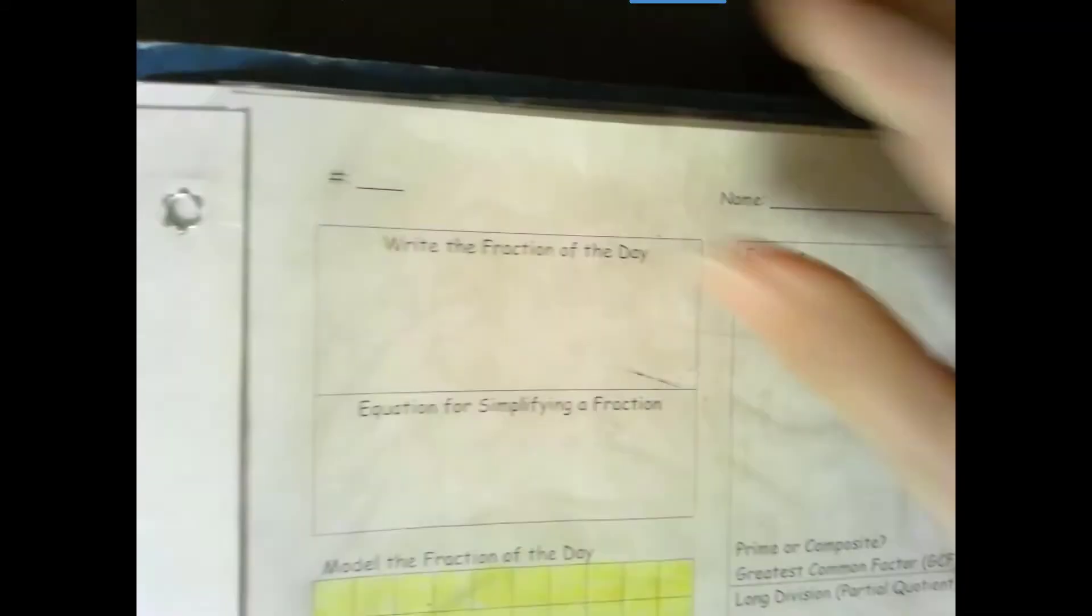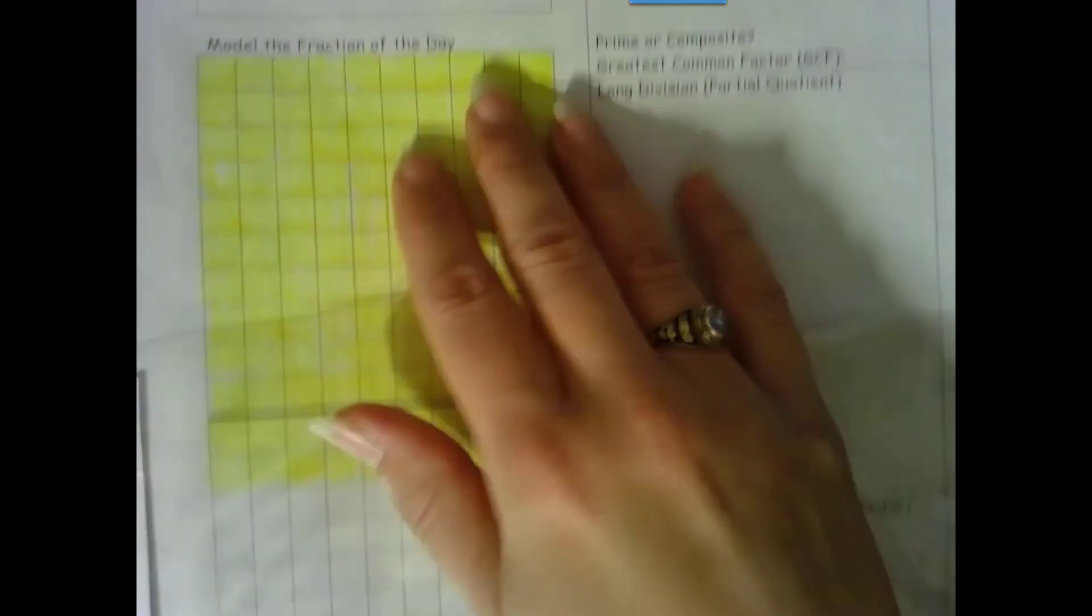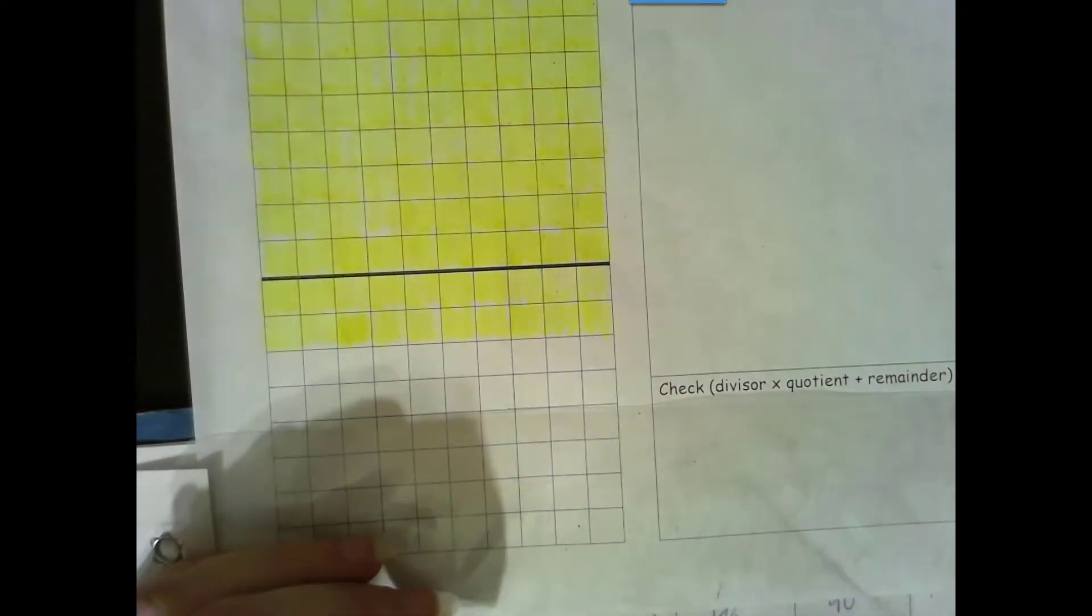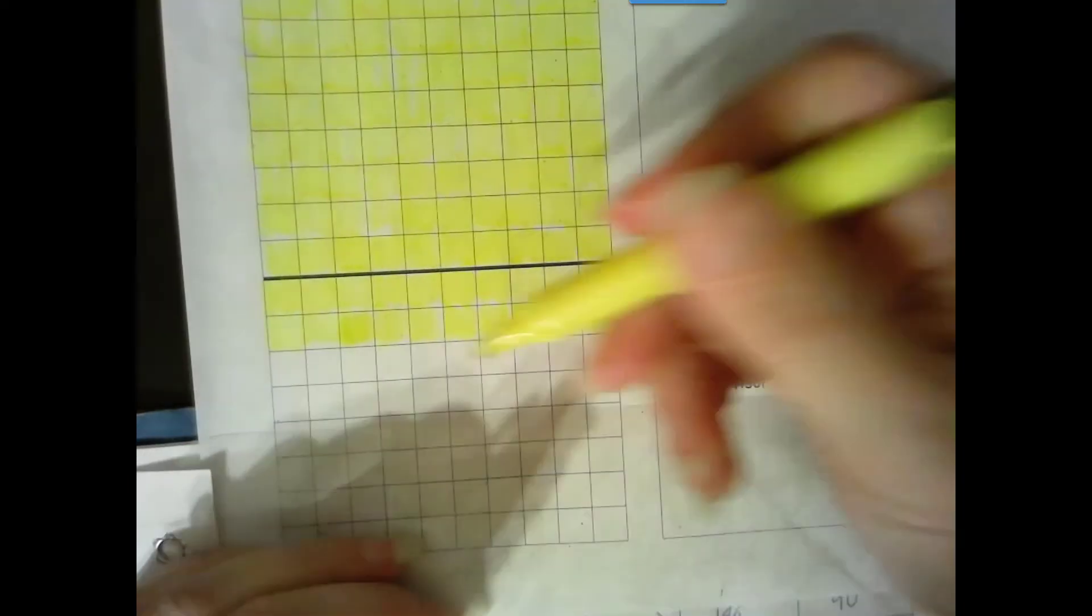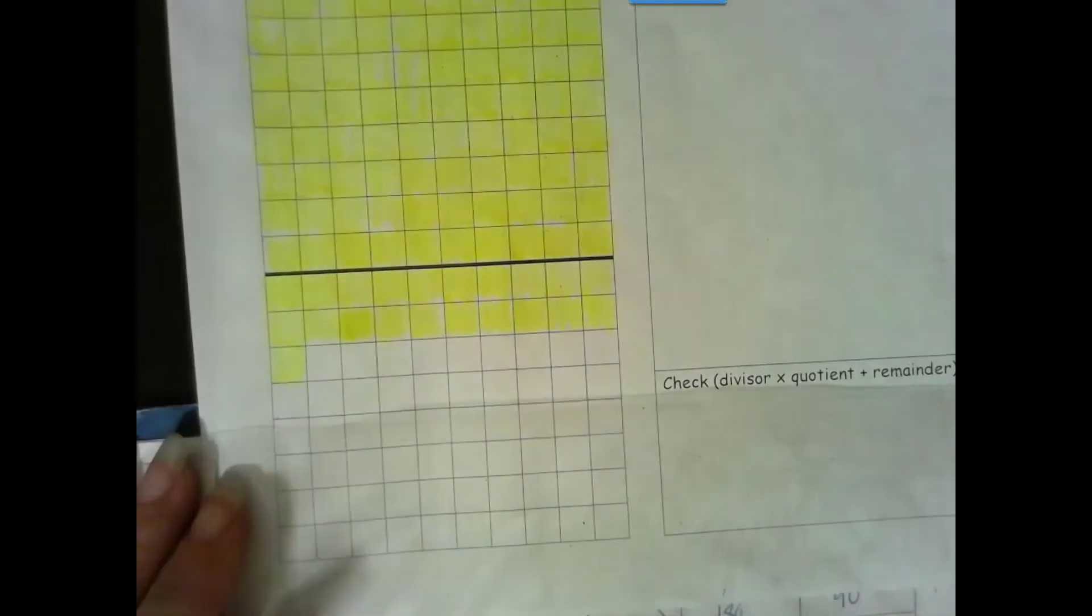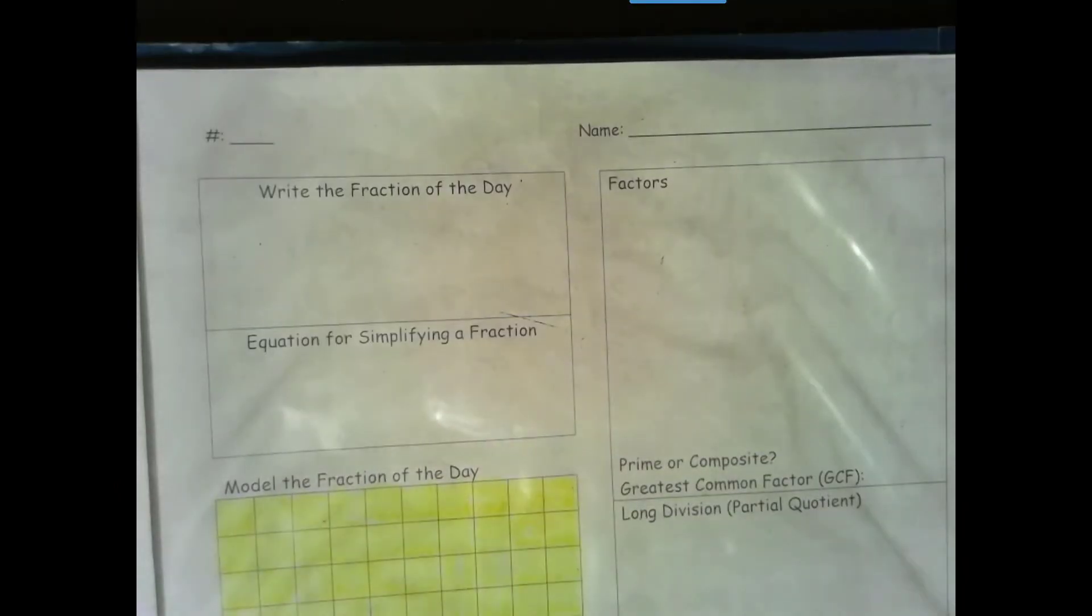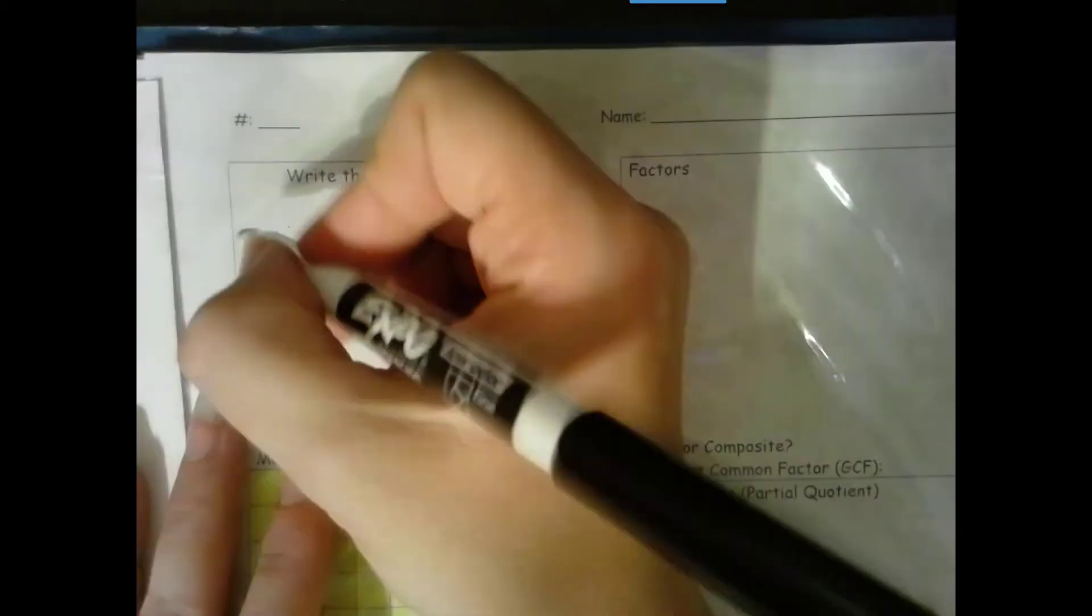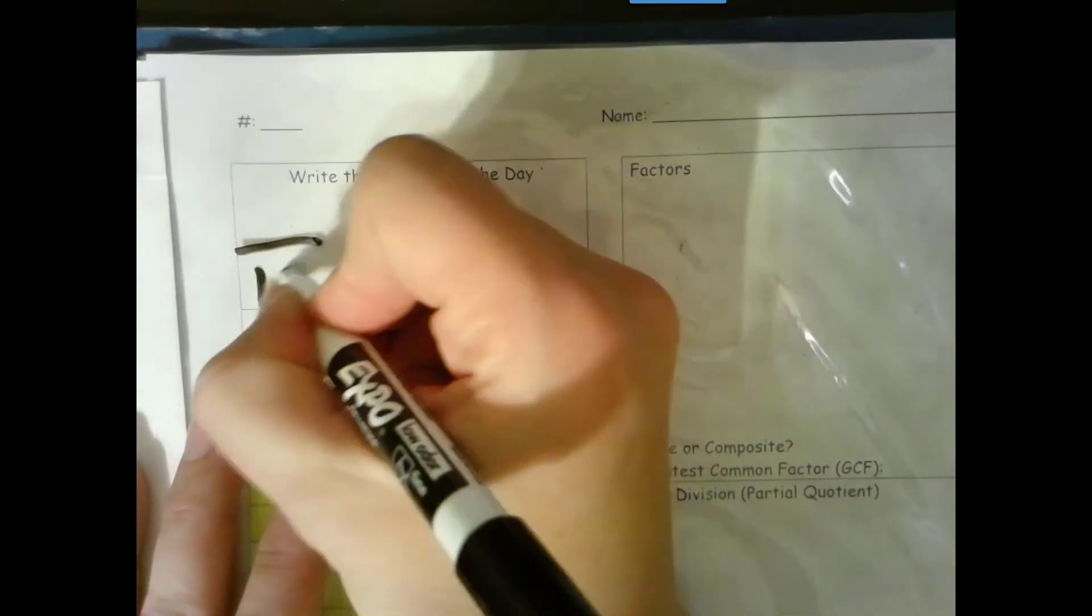Welcome to day 121 of our school year. We have 59 school days left. Let's go ahead and get down our beginning fraction. We have a total of 180 school days. We are on day 121.